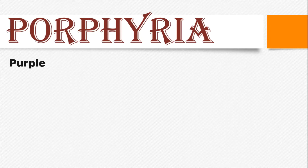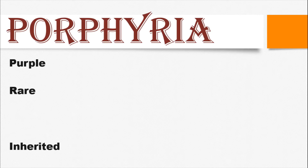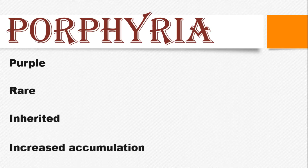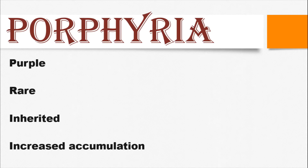Porphyria is a group of rare inherited disorders in which, due to a metabolic defect, there is increased accumulation of different porphyrins and subsequently their excretion through the kidney. Clinical features are manifested due to this increased level of accumulation of porphyrins in the blood.